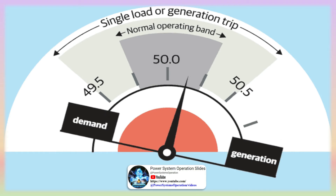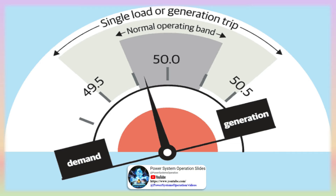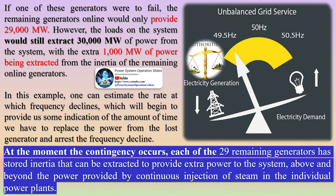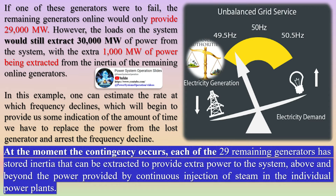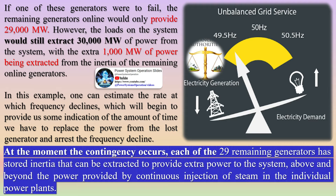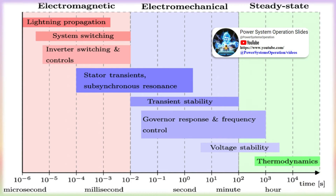The extra 1,000 MW would be extracted from the inertia of the remaining online generators. One can estimate the rate at which frequency declines, providing some indication of the time available to replace the power from the lost generator and arrest the frequency decline. Assuming the generators are all identical, each must provide an extra 34 MW from stored energy (1,000 MW divided by 29 generators). The constant injection of energy from fuel provides 1,000 MW and 34 MW is drawn from stored energy, meaning each generator is providing 1,034 MW.